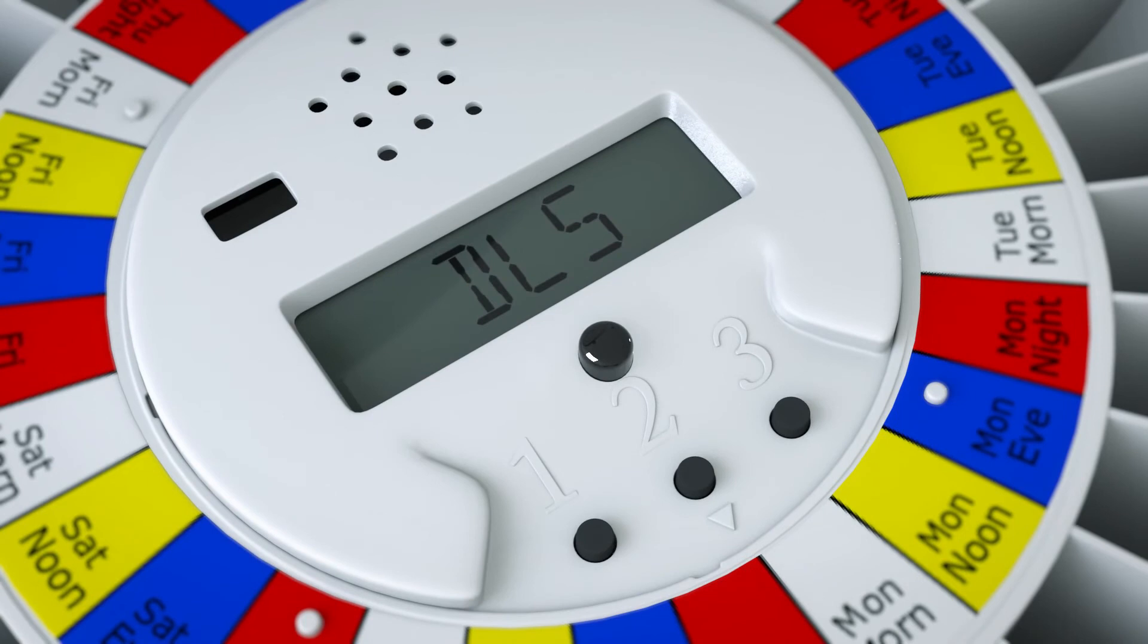Press button 1 until 'start' is displayed. Wait a few seconds and 'yy' will be displayed. Set the year using buttons 2 and 3, then press 1. 'mm' will be displayed. Use buttons 2 and 3 to set the month, then press 1.